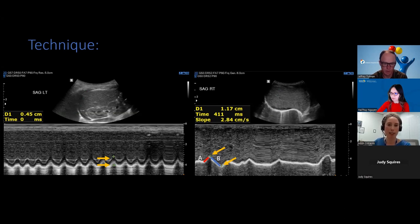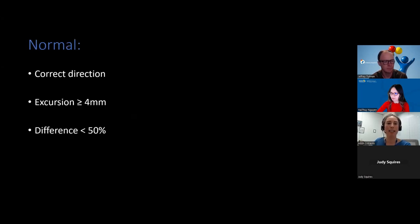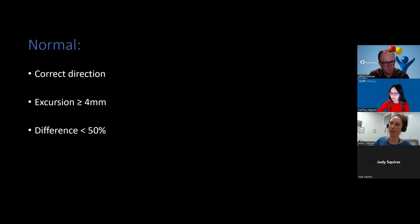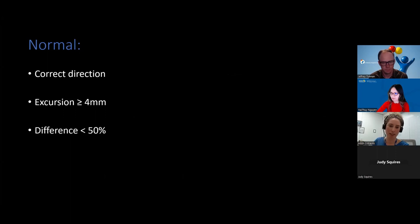With respect to the motion itself, it can be described as normal, decreased, absent, or paradoxical. It is considered normal when it occurs in the correct direction — toward the transducer with inspiration — the excursion is greater than 4 millimeters, and the difference in excursion between the two sides is less than 50%.